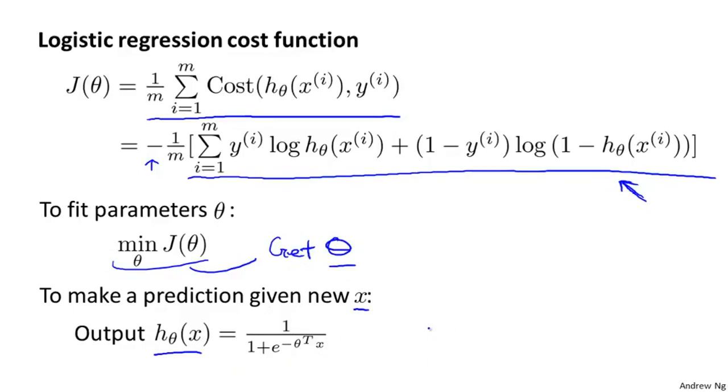And just to remind you, the output of my hypothesis I'm going to interpret as the probability that y is equal to 1, and this is given the input x and parameterized by theta. But just think of this as my hypothesis estimating the probability that y is equal to 1. So all that remains to be done is figure out how to actually minimize J of theta as a function of theta so that we can fit the parameters to our training set.